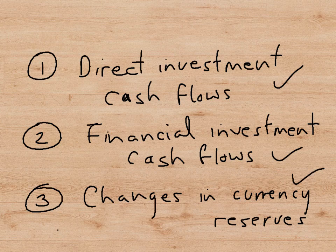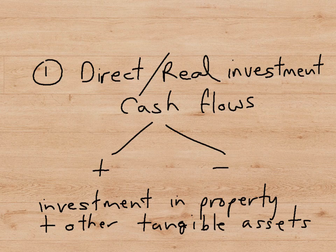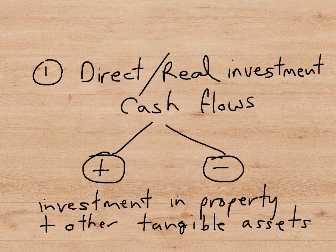The third section of the financial account records changes in currency reserves. Every country holds reserves of foreign currencies, and these reserves can either be rising or falling, associated with cash inflows or outflows. Looking at direct investment in more detail: these flows can be positive if foreigners are investing in the assets of the country, or negative if citizens are buying real assets abroad. For example, if a Japanese company buys a British company and its assets in the UK, that's an inflow, whereas if a British person buys a second home in Florida or Spain, that's an outflow.